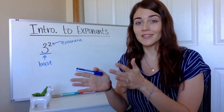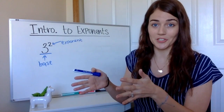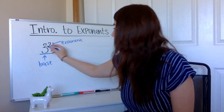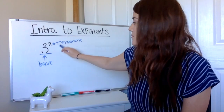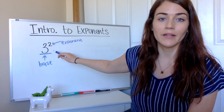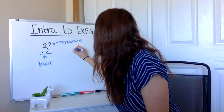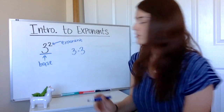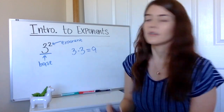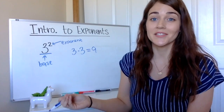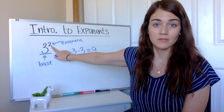Multiplication is repeated addition; exponents is repeated multiplication. What I mean is we're going to have our base number — that's the number we're multiplying — and then our exponent, which tells us how many times to multiply. So three to the second power is not three times two. That's three times itself, and we know three times three is nine. So three squared is not the same as three times two — it's three times itself.